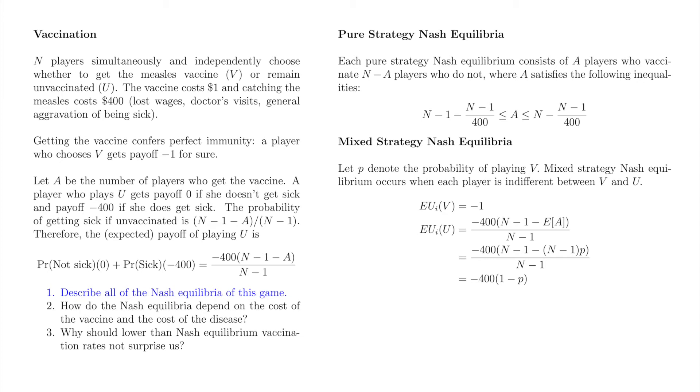Cancel N minus 1 from the numerator and denominator. At this point, it is apparent that our mixed strategy Nash equilibrium is independent of the number of players. Setting the expectations equal to each other, we see that the Nash equilibrium P satisfies the following equation. P is equal to 399 out of 400, or a Nash equilibrium vaccination rate of 99.75%.